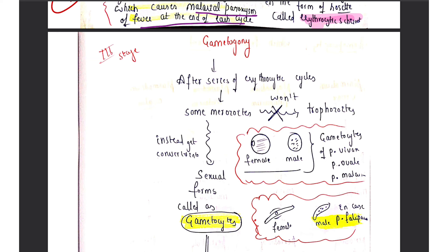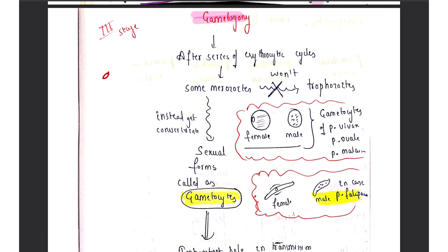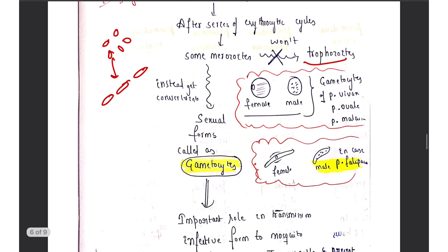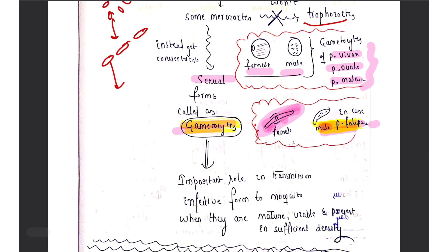The third and last stage in the human cycle is gametogony. Some of the merozoites released in the blood circulation from the rupture of the RBC develop into trophozoites, which are then converted into sexual forms — the gametocytes. The female gametocyte and the male gametocyte: in Plasmodium falciparum, gametocytes appear in banana shape, while in Plasmodium vivax and Plasmodium malariae they appear round. Finding banana-shaped gametocytes in a smear indicates infection with Plasmodium falciparum.